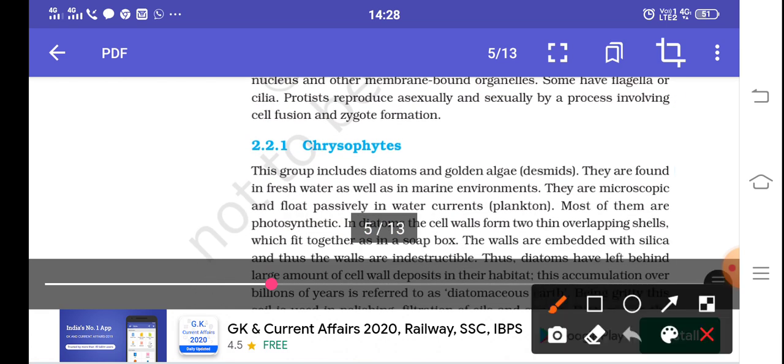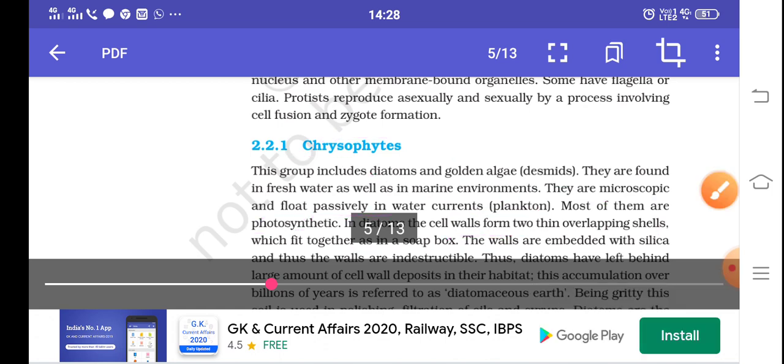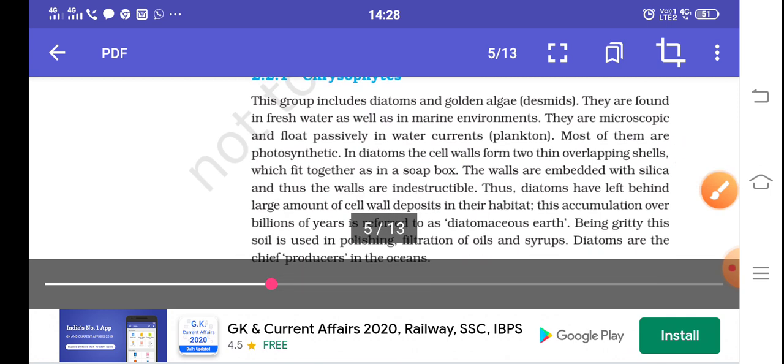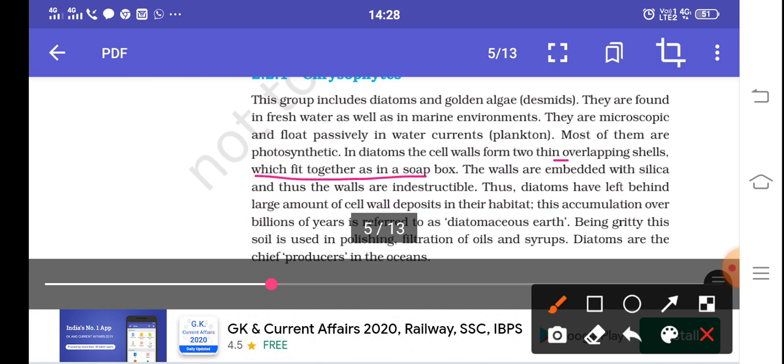The first category of Protista is chrysophytes. They are called diatoms and golden algae. They are found in marine environments. They are microscopic and float passively in water as planktons, the plant life stored in seawater. They are photosynthetic, making their own food. The cell wall is made from two thin overlapping shells that form a soap-box-like structure. These overlapping shells are present inside the organism, and silica makes them very hard. After their death, the shells remain.